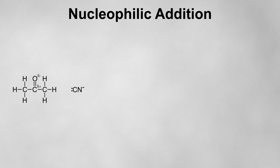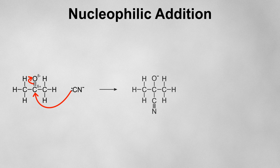It will be electrostatically attracted towards the delta plus carbon atom and will move in to form a new bond to it. In doing so, the pi electrons in the carbonyl will be repelled all the way onto the oxygen atom, resulting in a negatively charged oxygen.